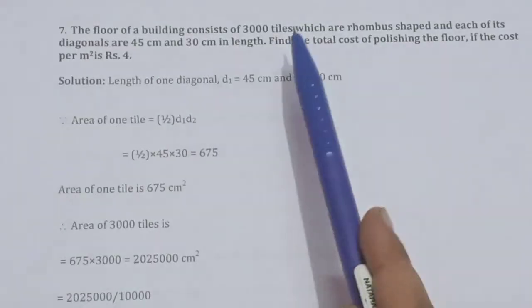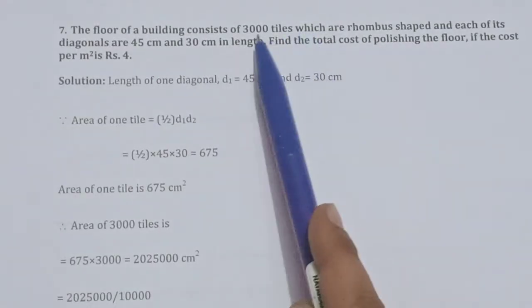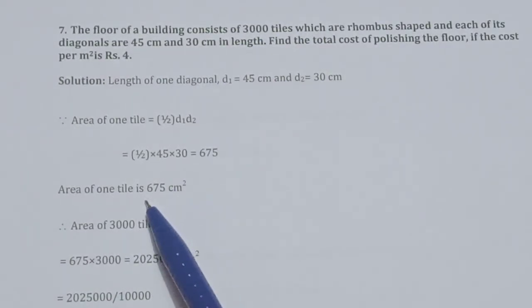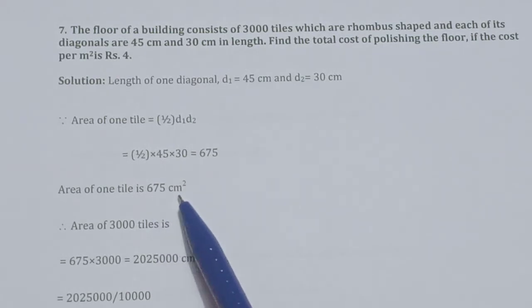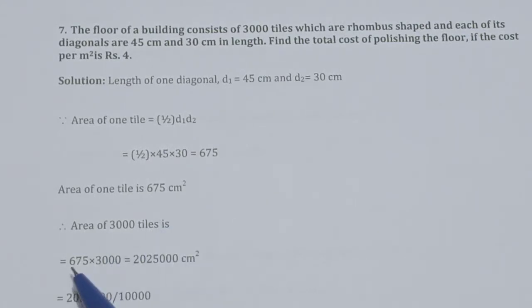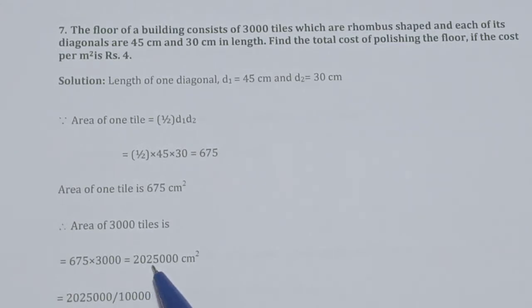This is the area of one tile. The total number of tiles is 3,000. So the area of 3,000 tiles = 675 × 3,000 = 20,25,000 cm².